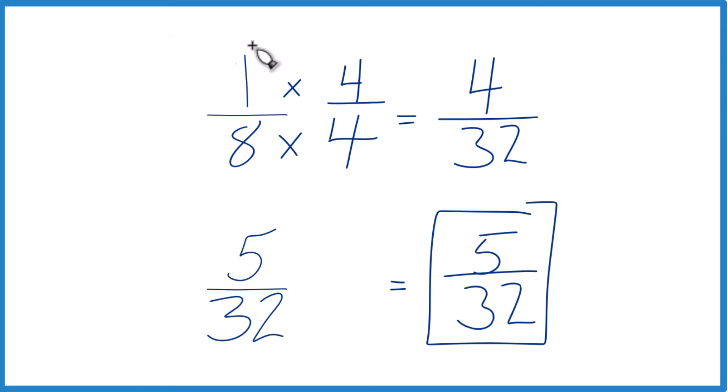And you remember that these are equivalent, so 5 32nds is also greater than 1 8th. This is Dr. B, thanks for watching.